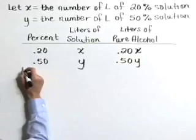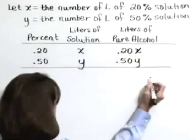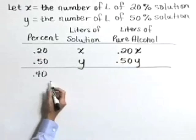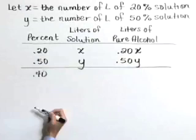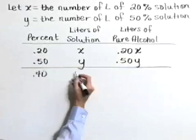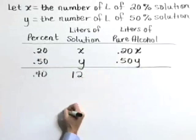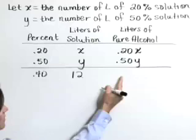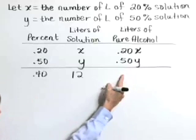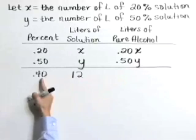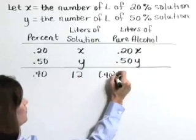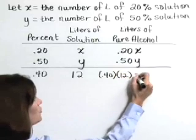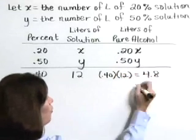Now we're told that in the end we want a mixture that is a 40% solution. That makes sense because this is a number between 20 and 50. We want the amount of this mixture to be 12 liters. Now let's also complete this last value. If there are 12 liters of a 40% solution, then the amount of pure alcohol there is 40% of 12. That's .40 times 12 or 4.8.